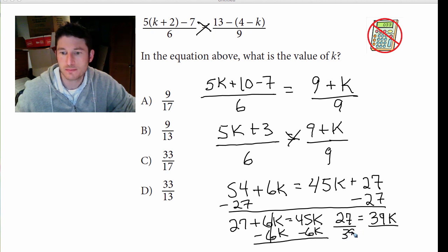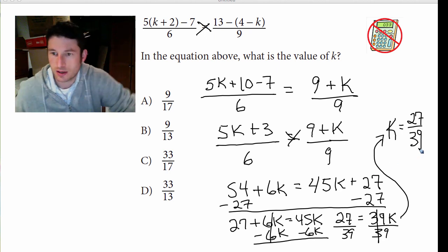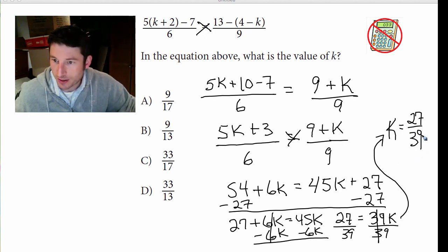Divide by 39. So we have k equals 27 all over 39. And we can divide each one of those by 3. So 3 goes into 27 nine times, and 3 goes into 39 thirteen times.